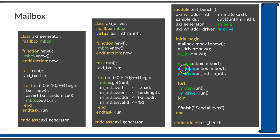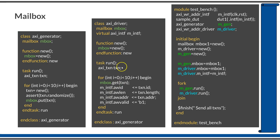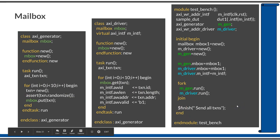The driver and generator mailboxes are separate objects by default. To connect them, mgen.mbox and mdriver.mbox are both assigned to mbox1, making them point to the same mailbox. The driver's interface is also pointed to the local interface. The run tasks of both driver and generator are forked so they start simultaneously — whenever the generator puts a transaction, the driver retrieves and drives it. After 10 transactions, $finish is called.